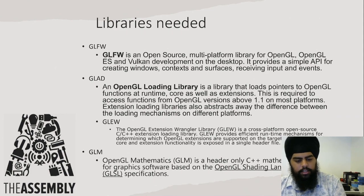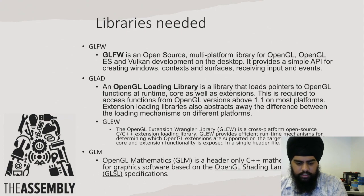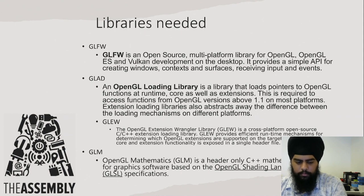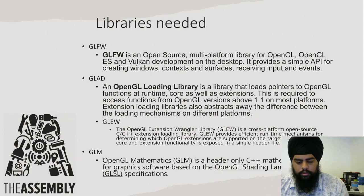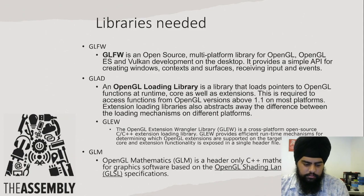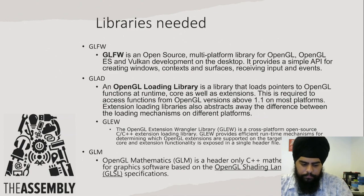GLAD is an OpenGL loading library. It is a library that loads pointers to OpenGL functions at runtime, core as well as extensions. It is required to access functions for OpenGL versions above 1.1 on most platforms. The extension loading library also abstracts away differences between loading mechanisms on different platforms. GLEW is an OpenGL Extension Wrangler library — a cross-platform open-source C/C++ extension loading library that provides efficient run-time mechanisms for determining which OpenGL extensions are supported on the target platform. GLM is a simple OpenGL math library which uses the OpenGL Shading Language, including Vector3 and Matrix Multiplication.